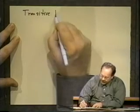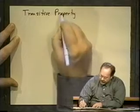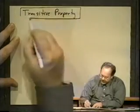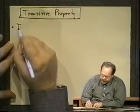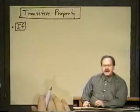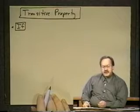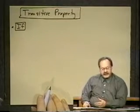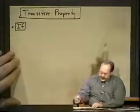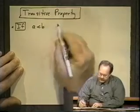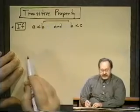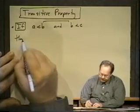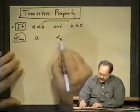All right, further there is the transitive property. Another one that will seem very familiar once I get it written out here. It says the following, in two parts. Very often we'll have statements about inequalities in two parts because we have to consider the less than cases and the greater than cases, and they'll usually mimic each other. If a is less than b and b is less than c - notice that b is common here - then we conclude that a is less than c.